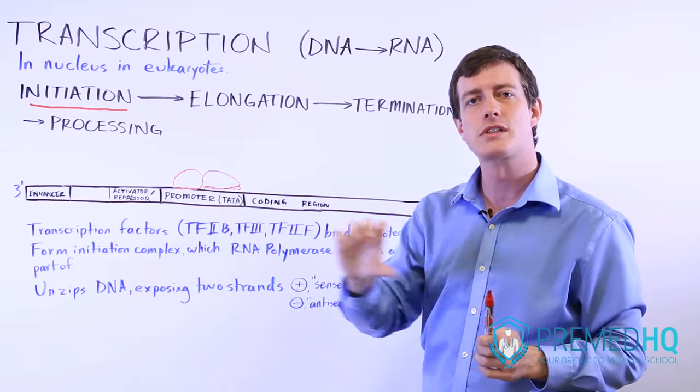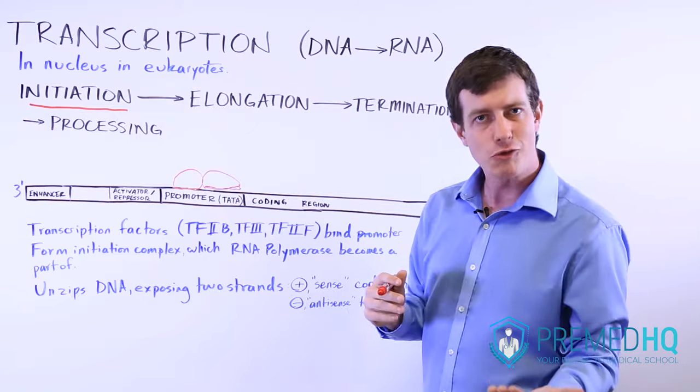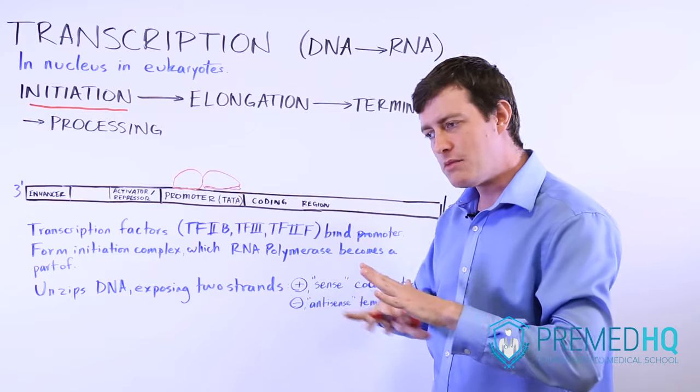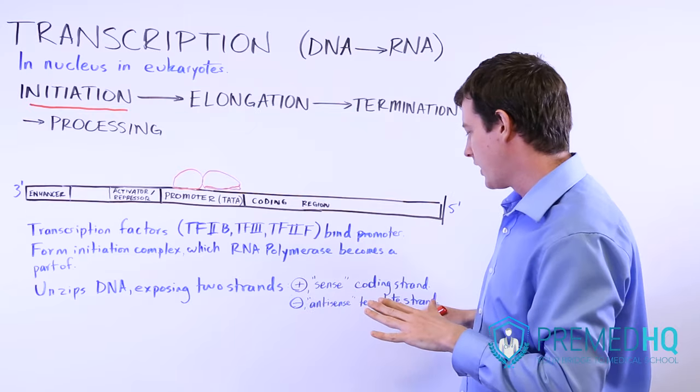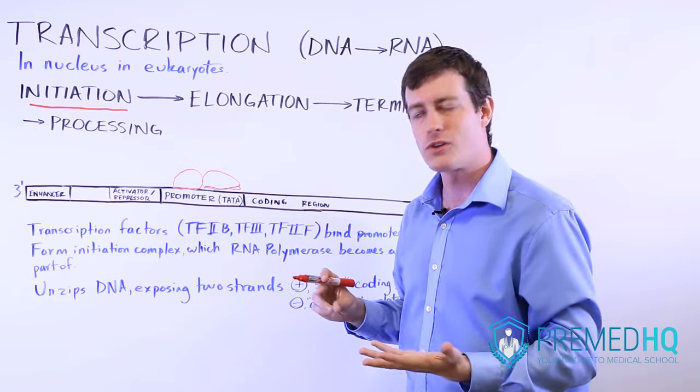That's the one that the polymerase will slide over and produce RNA that is complementary to it. So it won't be the same sequence as the template strand, but the template strand is used to make your RNA transcript.